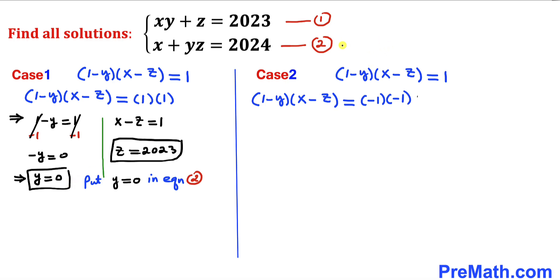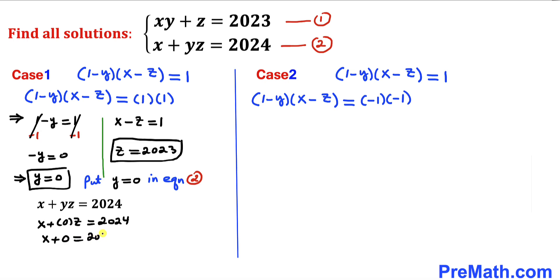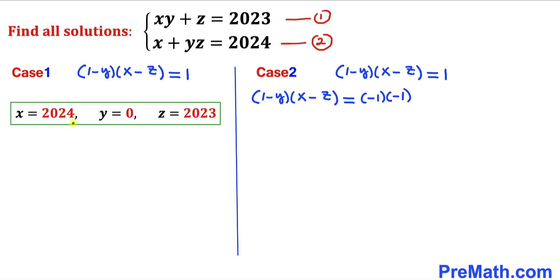Now substituting y equals 0 into equation 2: x plus 0 times z equals 2024, which gives x plus 0 equals 2024, so x equals 2024. Therefore for Case 1, x equals 2024, y equals 0, and z equals 2023.